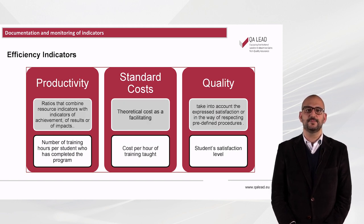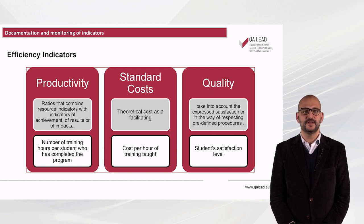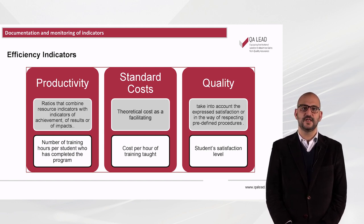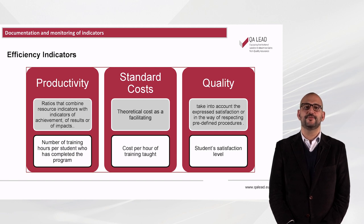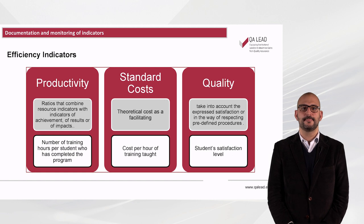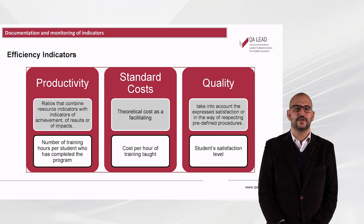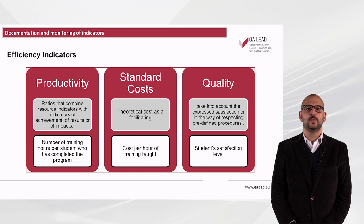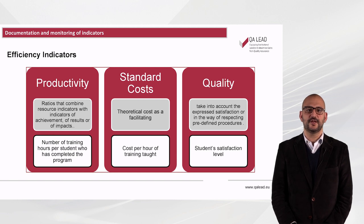Let's also look at some examples of efficiency indicators. Of productivity, which means ratios that combine resource indicators with indicators of achievement, results, or impacts — for example, the number of training hours per student who completed the program. Of standard costs, which means theoretical costs as a facilitating element for objectification of the action — for instance, cost per training hour taught. Of quality, which means taking into account expressed satisfaction or the way of respecting predefined procedures — for example, the student satisfaction level.